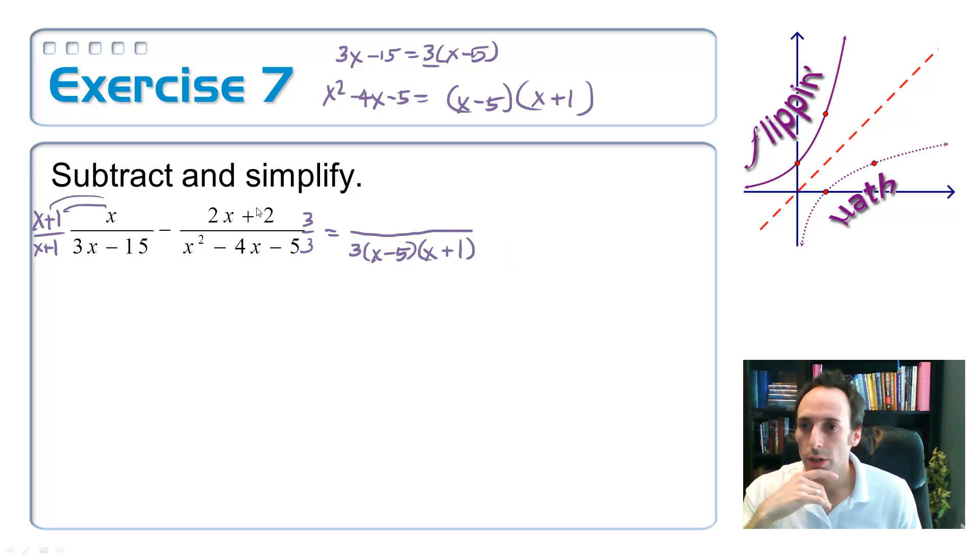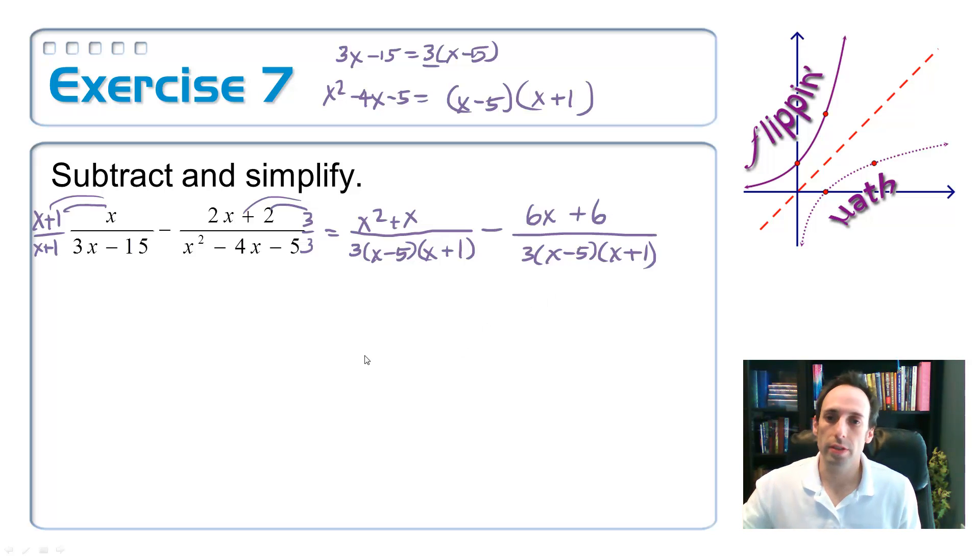Let's distribute here across the top. x squared plus x minus. Let's do the same thing on the next one. 3 times. Distribute here. I'd get 6x plus 6. Now, subtract the tops. Keep the bottoms the same. Nothing to combine x squared up with. So, that's x squared. I'd have x minus 6x, which is negative 5x. And then I just have this negative, basically 0 minus 6. So, it's negative 6 over my original denominator, 3x minus 5x plus 1.